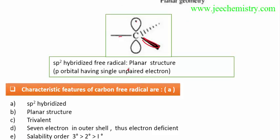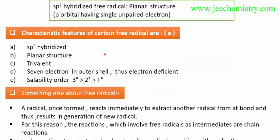The p orbital with a single unpaired electron will try to fulfill its valency and complete its octet to become stable. A characteristic feature of free radicals: it is sp3 hybridized, has planar structure, is trivalent with seven electrons — showing electron deficiency. Stability order: tertiary free radical is more stable than secondary, which is more stable than primary.